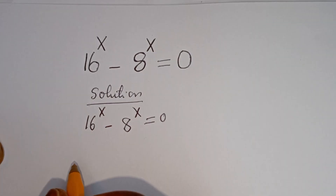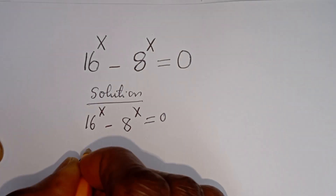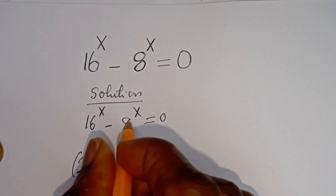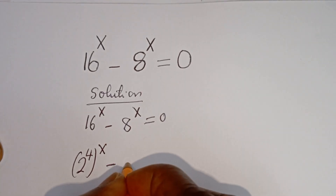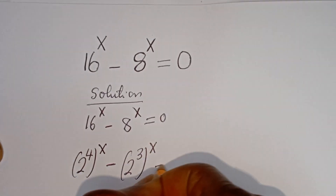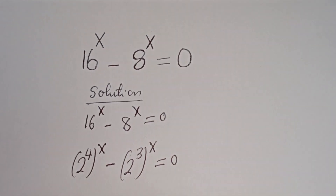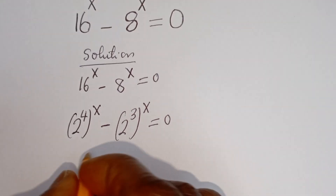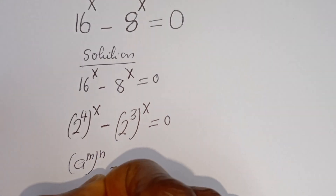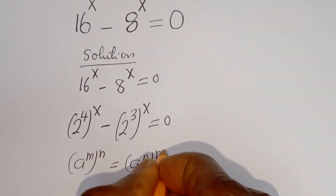So, 16 to the power of x can be written as 2 to the power of 4, to the power of x. Minus 8 to the power of x can be written as 2 to the power of 3, to the power of x, is equal to zero. Take note that if you have a to the power of m, to the power of n, this is equal to a to the power of n, to the power of m.